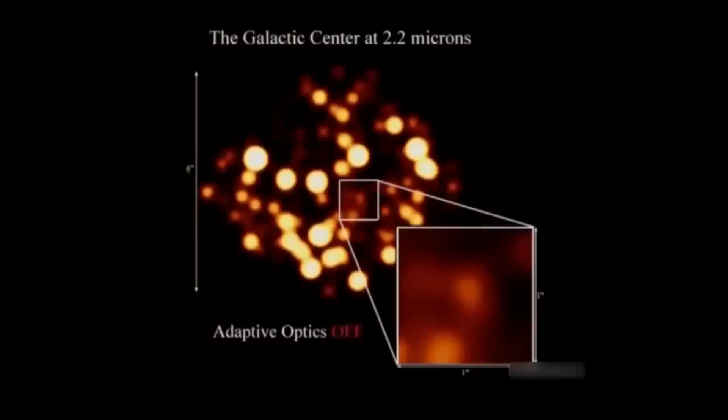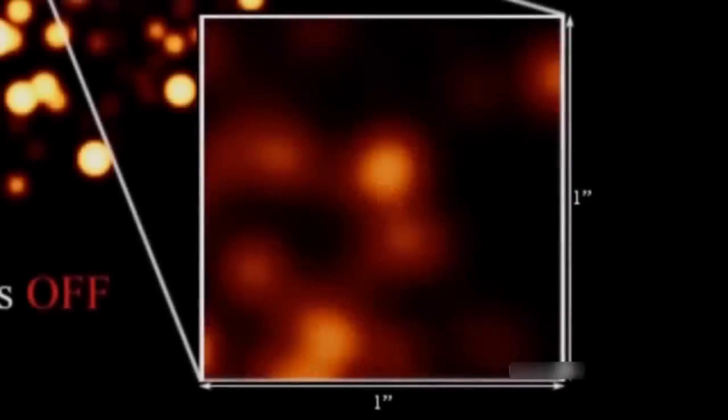And in particular, you see stars near the center of the galaxy. Without adaptive optics, you would only see one big blob. And those stars are in fact the most important for us to track. We track all of them, but these are the ones that are the key to the problem.